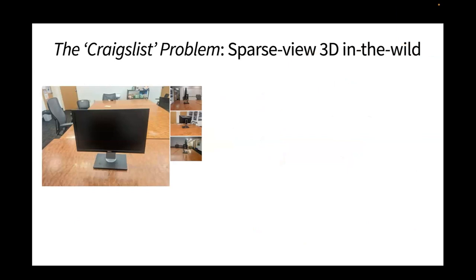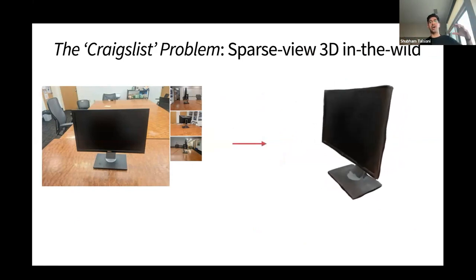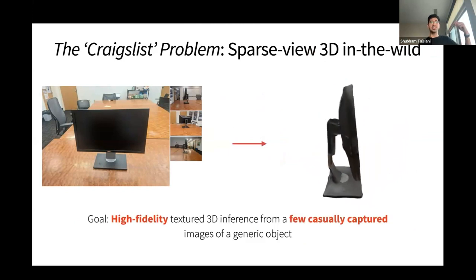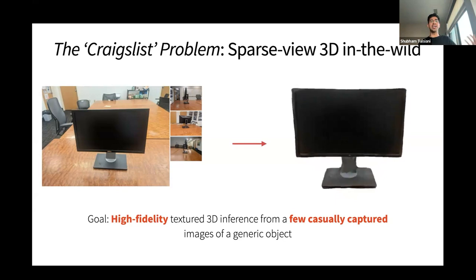The problem setup I've been really inspired by is what I call the Craigslist problem — or the eBay problem — where you have just a few images of an object, say a monitor, and you want a high-fidelity textured 3D reconstruction from just these handful of images. Someone on eBay or Craigslist has taken two or three images of an object they want to sell. It's a generic object of arbitrary category, casually captured. You just have a few images and you want a high-quality reconstruction.